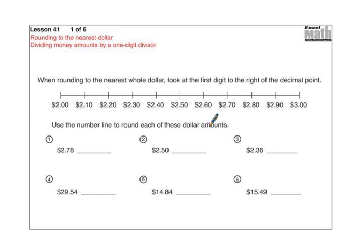Here we go with fifth grade Excel lesson 41. We're going to look at rounding to the nearest dollar and dividing money amounts by a one-digit divisor.